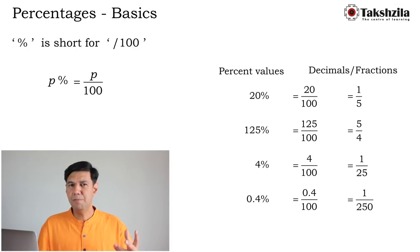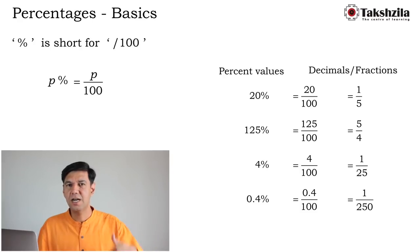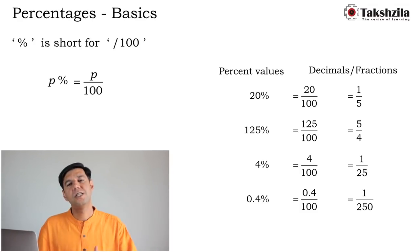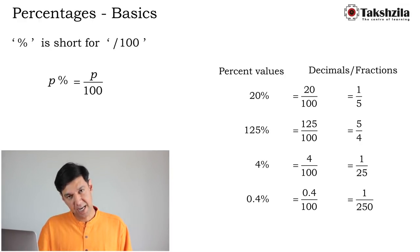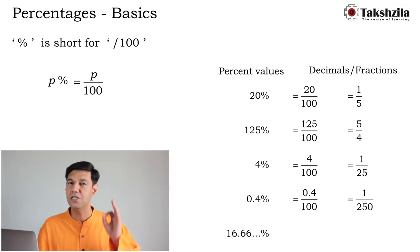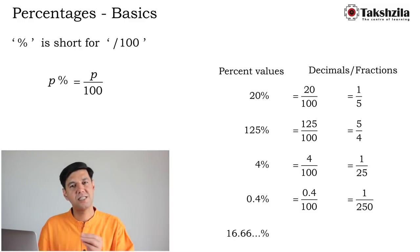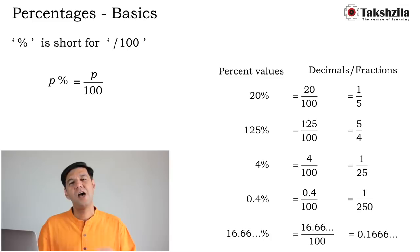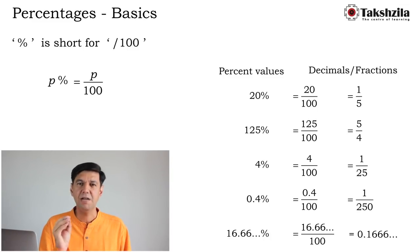Note the relation: 0.4 is one-tenth of 4, so 1/25 becomes 1/250. We could also have a recurring number: 16.6666...% appears very often. It equals 16.6666.../100. In decimal form it's 0.16666..., which you could approximate to 0.167, but that introduces approximation error.